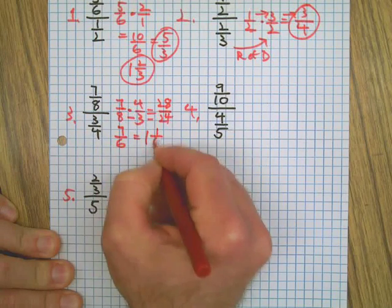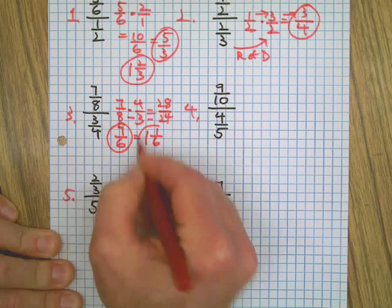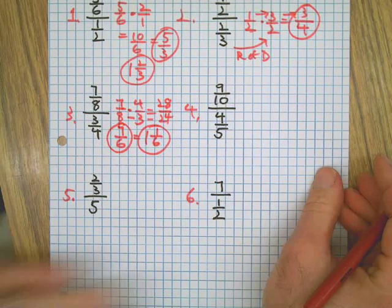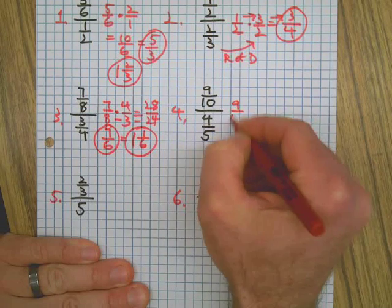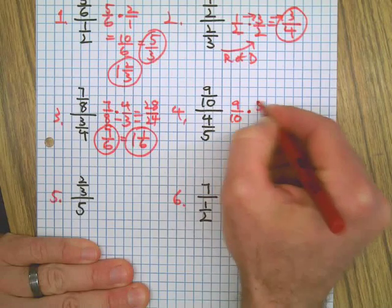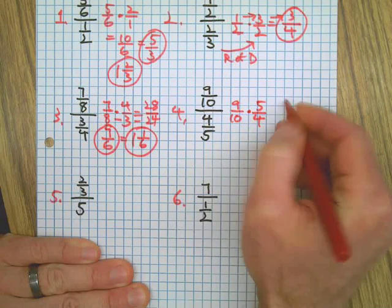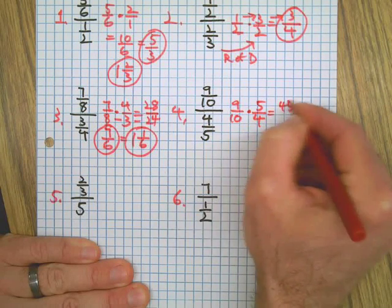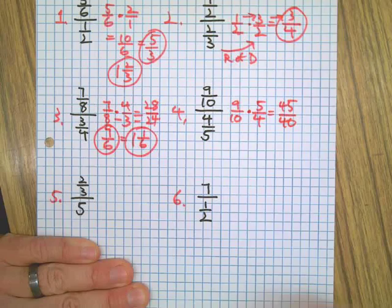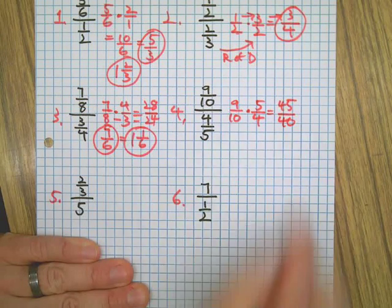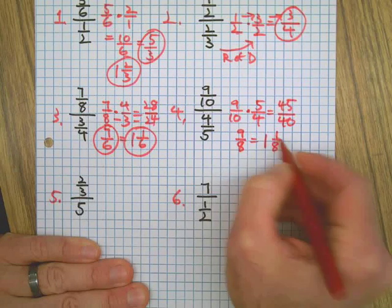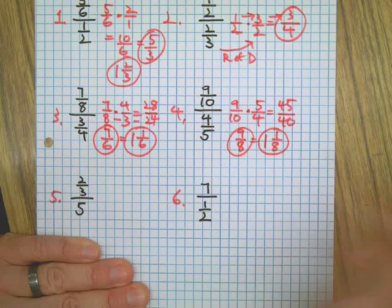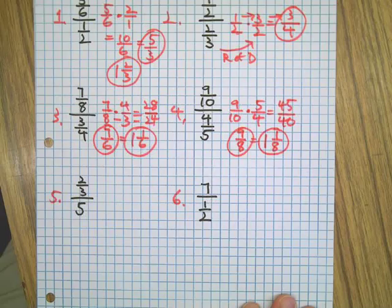Here's another one. Flip the denominator, multiply straight across: 45/40. Both of those are divisible by 5. That's the same as 9/8, or 1 and 1/8 as a mixed number.